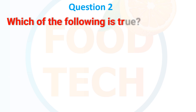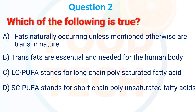Question 2. Which of the following is true? A. Fats naturally occurring unless mentioned otherwise are trans in nature. B. Trans fats are essential and needed for the human body. C. LCPUFA stands for long chain polyunsaturated fatty acids. D. SCPUFA stands for short chain polyunsaturated fatty acids. The answer is D: SCPUFA stands for short chain polyunsaturated fatty acids.